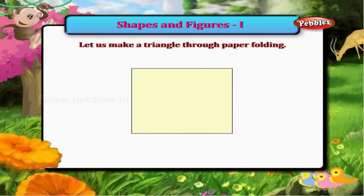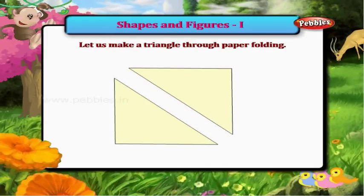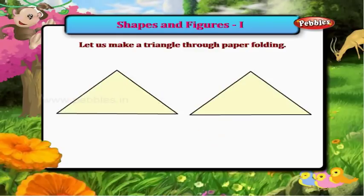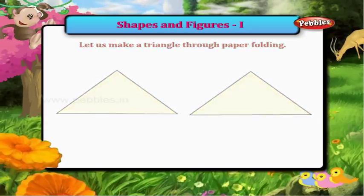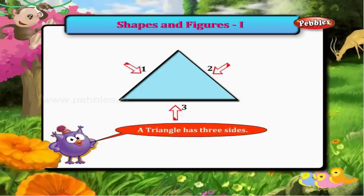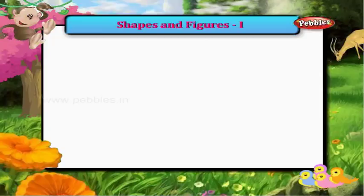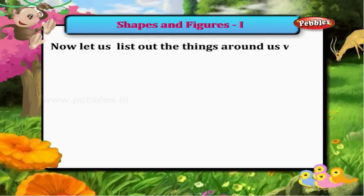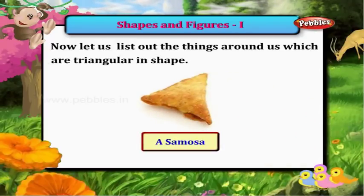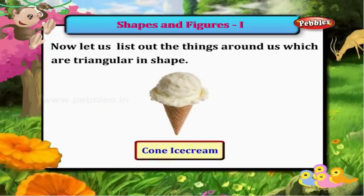Cut a rectangle along its diagonal — we get two triangles. A triangle has three sides. Things around us which are triangular in shape include a samosa and a corn ice cream cone.